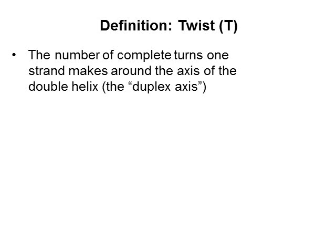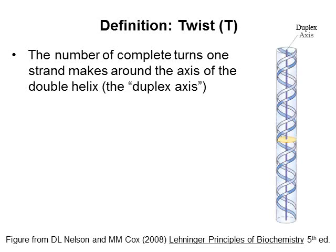To begin, let me define what is meant by the term twist, or T. The twist of a piece of DNA is the number of complete turns one strand makes around the axis of the double helix, which is also called the duplex axis. In this diagram, which depicts the two strands of a double helix, if you start at the bottom and follow the darker blue strand toward the top of the diagram you can count the number of complete revolutions it makes around the central helical axis.